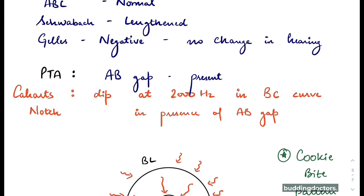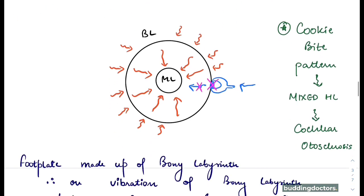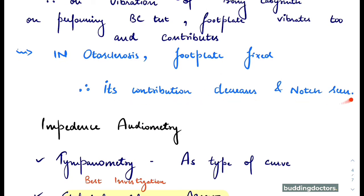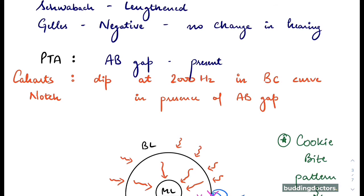On pure tone audiometry there will be an air-bone gap, and there is a Carhart's notch — a special characteristic seen in otosclerosis. It is a dip at 2000 Hz in the bone conduction curve in the presence of an air-bone gap. In otosclerosis the footplate is fixed and cannot move, so its contribution to bone conduction decreases and the notch appears at 2000 Hz.